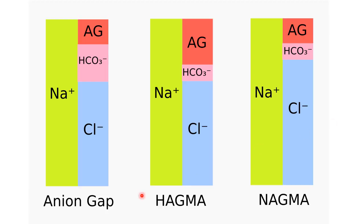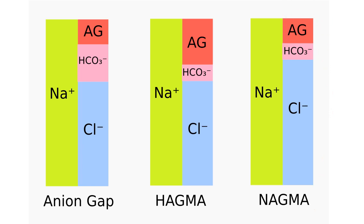This picture shows the normal anion gap — the difference between unmeasured cations and unmeasured anions. In high anion gap metabolic acidosis, the reduction in bicarbonate is not accompanied by an increase in chloride, so the anion gap increases. In normal anion gap metabolic acidosis, the decrease in bicarbonate is accompanied by an increase in chloride, so the anion gap value remains normal.